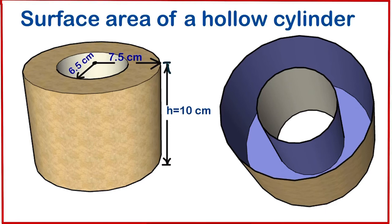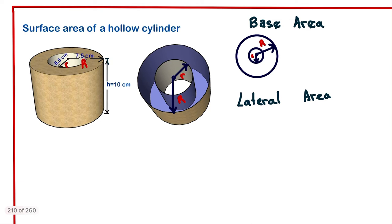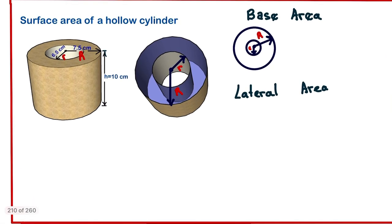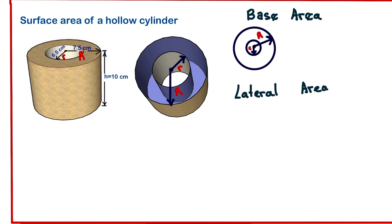Hello, welcome to Mathematics 4. Today we are going to calculate the surface area of a hollow cylinder. The first thing you need to understand is that a hollow cylinder is made up of two bases, and each base is in the form of a ring — one at the top and another at the bottom.